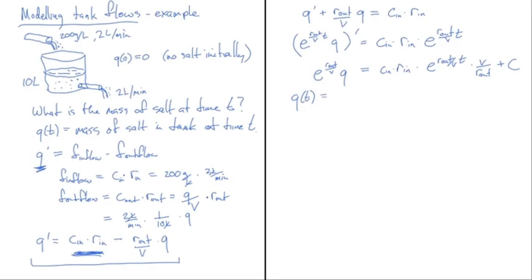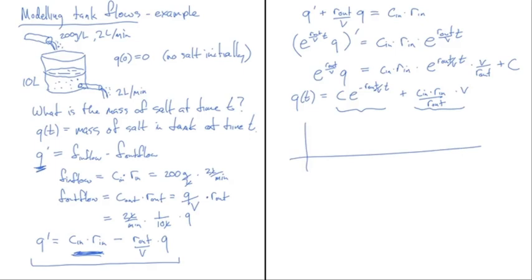Dividing through by the exponential, the general solution is q(t) = C · e^(-r_out/V · t) + (c_in · r_in · V / r_out). The first term is time-dependent and the second is a constant. All constants are positive physically, so that second term forms a horizontal asymptote level that q converges to after the exponential decays.